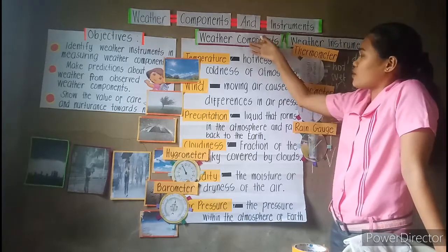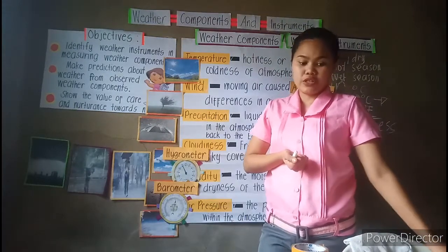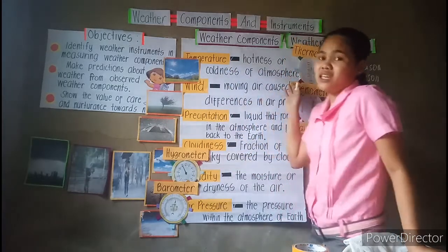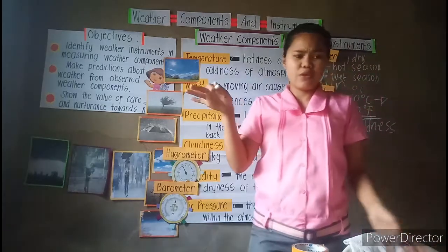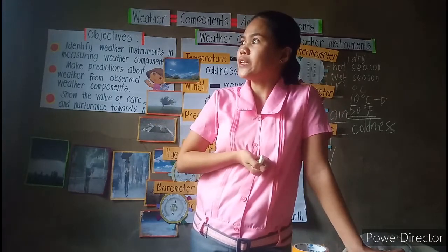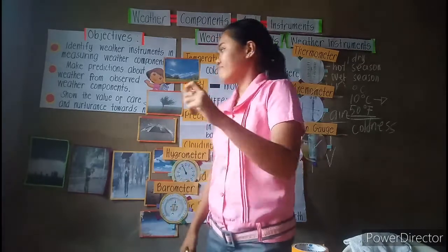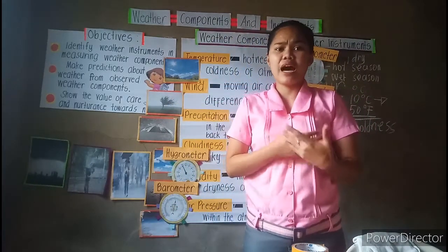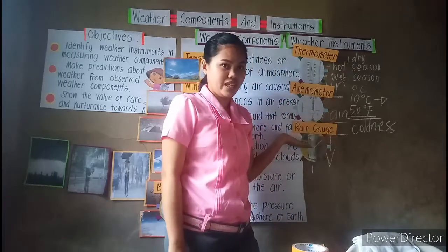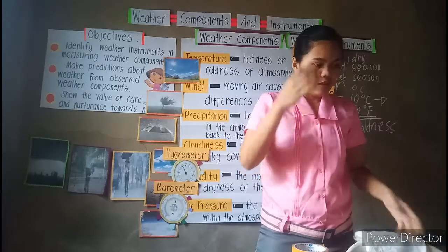We can use these instruments to measure weather components. Because years before class, our ancestors predicted weather through these components only, without any instruments, because those days were not yet high-tech. They would just see the clouds — if it is gloomy or bright — then feel the wind if it is strong or not, and try to feel the temperature if it is hot or cold. That's how our ancestors predicted weather, and still they were able to know the weather for that day.